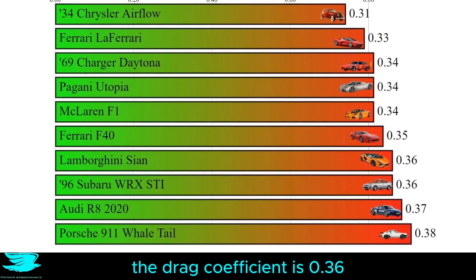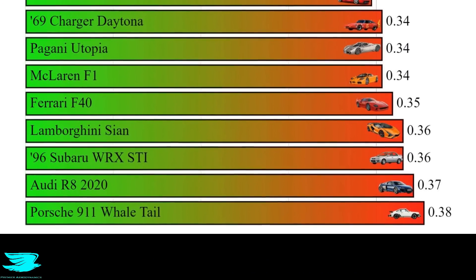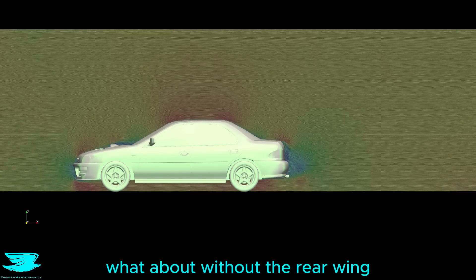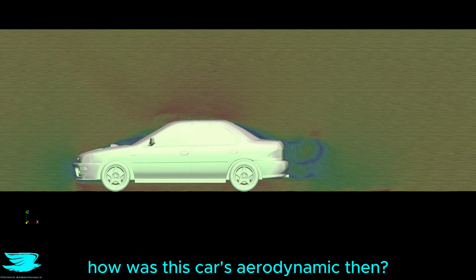The drag coefficient is 0.36, which is better than a kick in the pants. That is for the original car with the rear wing. What about without the rear wing? How was this car's aerodynamics then?